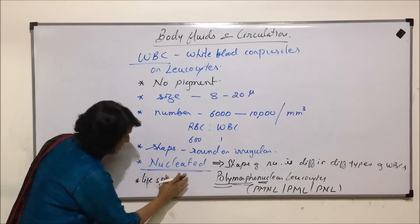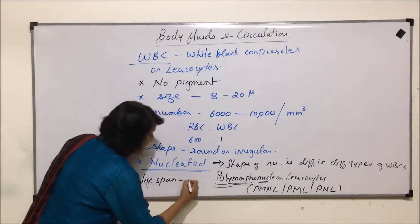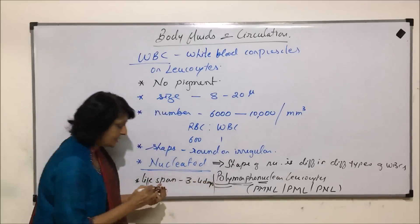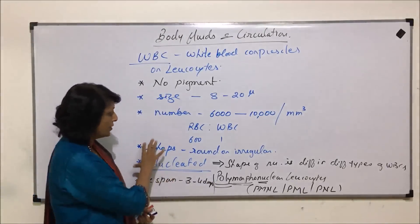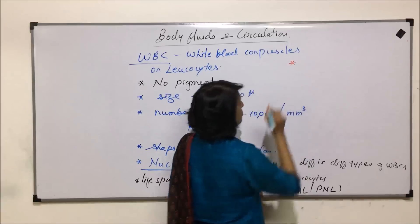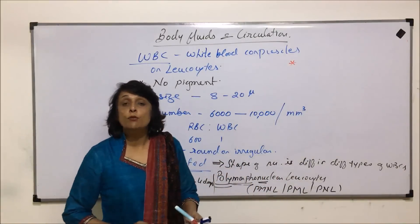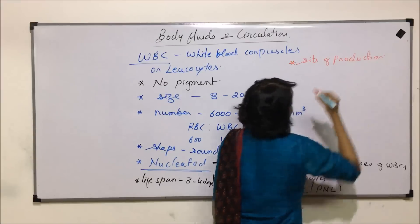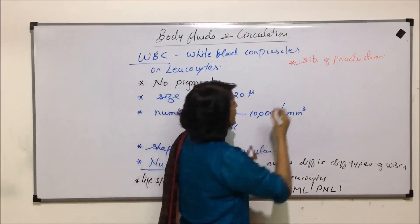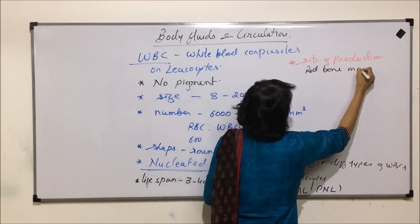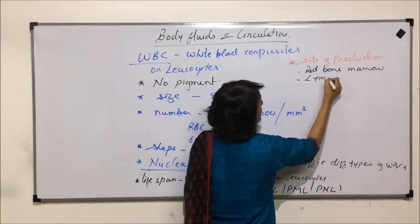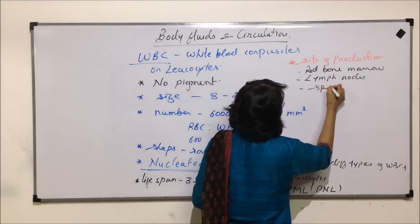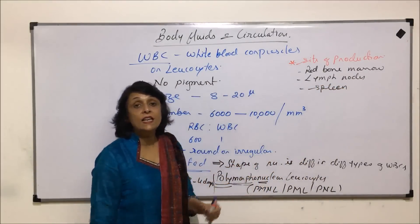The lifespan of WBCs is very short — only a few days, about three to four days, compared to RBCs whose lifespan is 120 days. Regarding the site of production, WBCs are produced at multiple places: red bone marrow, lymph nodes (lymphoid tissue), and the spleen.